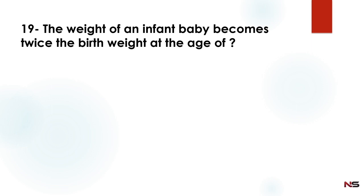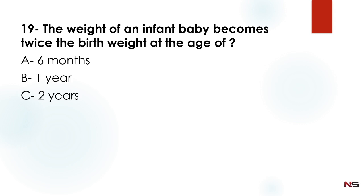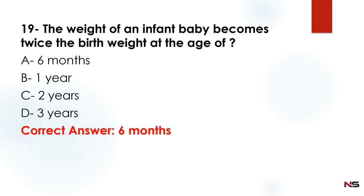The weight of an infant baby becomes twice the birth weight at the age of — Option A: six months, Option B: one year, Option C: two years, Option D: three years. The correct answer is six months — at six months, the weight of an infant baby becomes twice the birth weight.